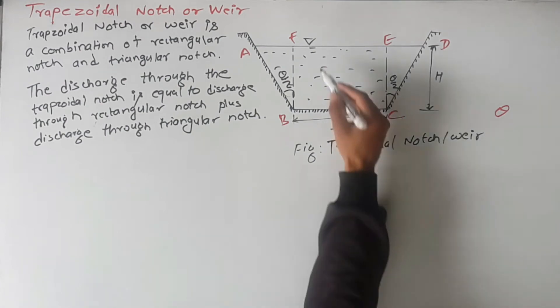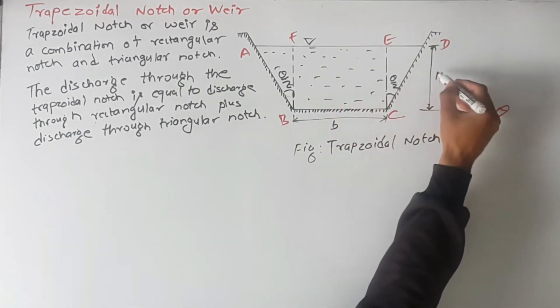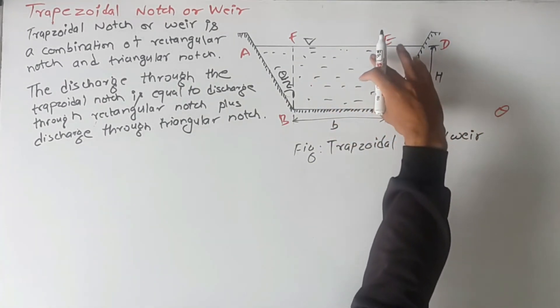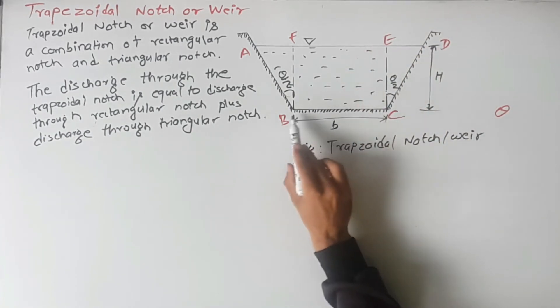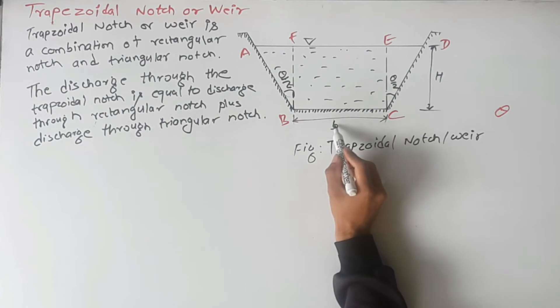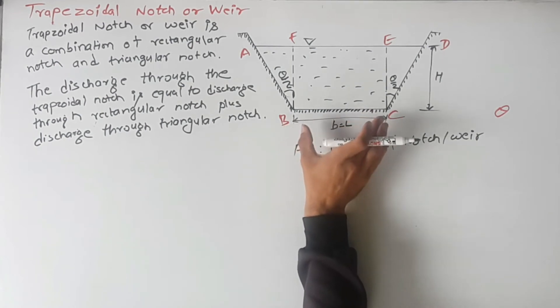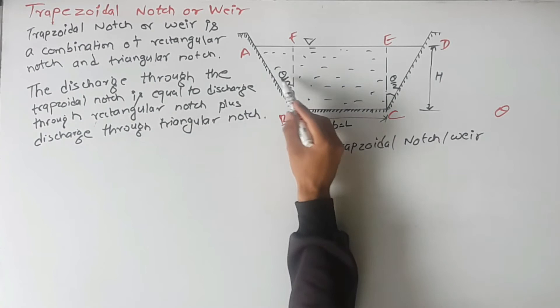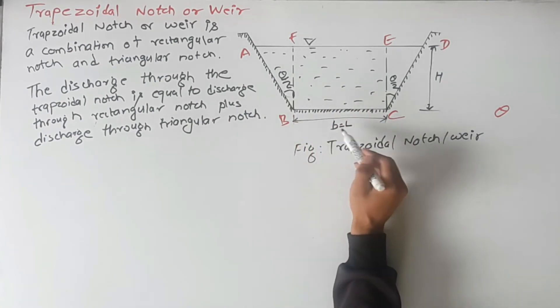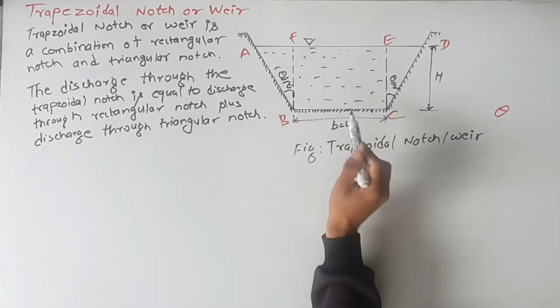In the figure, we can see the free surface is here. Let H be the height of the water above the notch. This is the level of the notch, crest level. Let B or L be the length or width of the notch. And this angle is theta by 2. So now we can write the assumption parameters here.